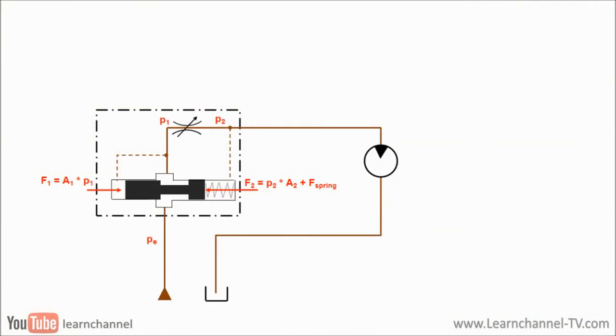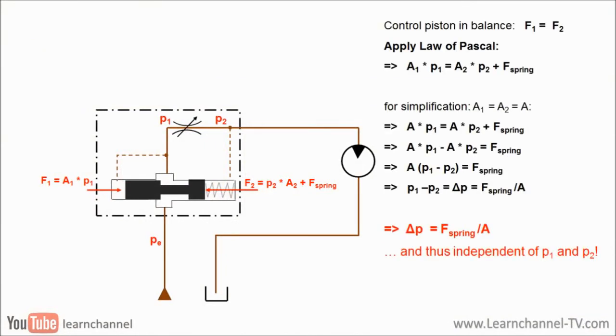Consider the control piston imbalance. As deduced aside, the pressure drop at the throttle point is independent of pressure P1 or P2, but of constant value. However, this also means that the flow rate must be constant.